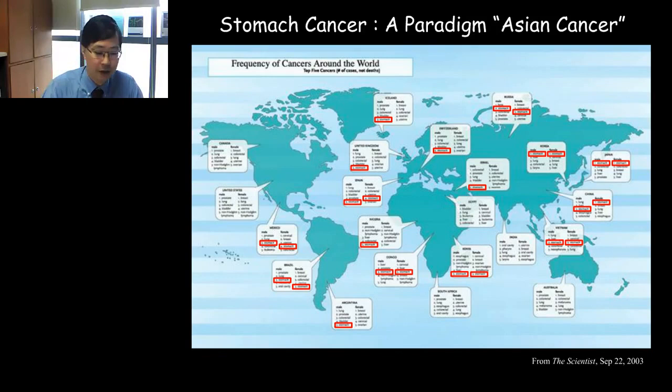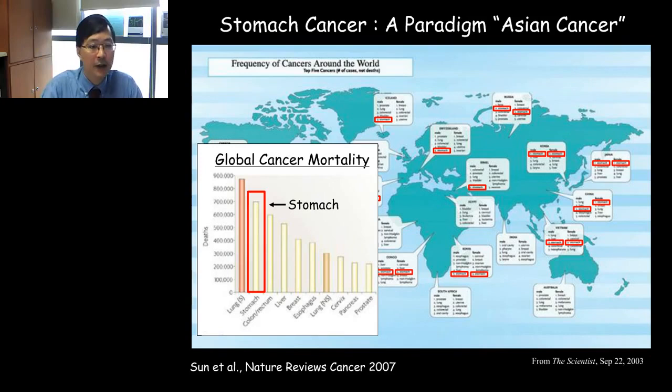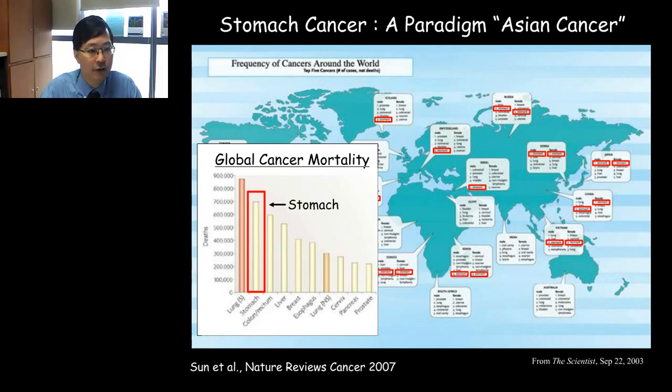Another way to look at this is not so much cancer incidence but cancer mortality — the cancers that cause the most deaths. Right at the top is lung cancer, mostly due to tobacco-induced carcinogenesis. But the second most deadly is actually stomach cancer. Despite the fact that these cancers are more prevalent in Asia, they are a significant cause of global cancer mortality. Deaths due to stomach cancer range between 700,000 to 800,000 worldwide.